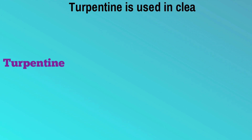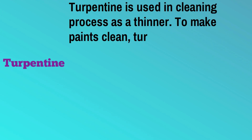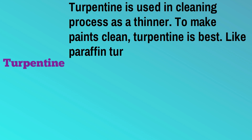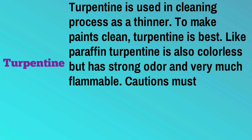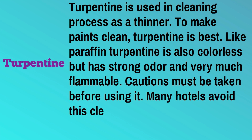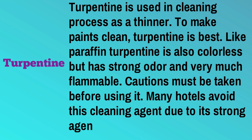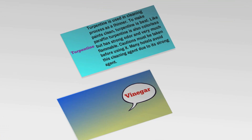Turpentine is used in the cleaning process as a thinner to make paints clean. It is colorless but has a strong odor and is very flammable — caution must be taken before using it. Many hotels avoid this cleaning agent due to its strong odor.